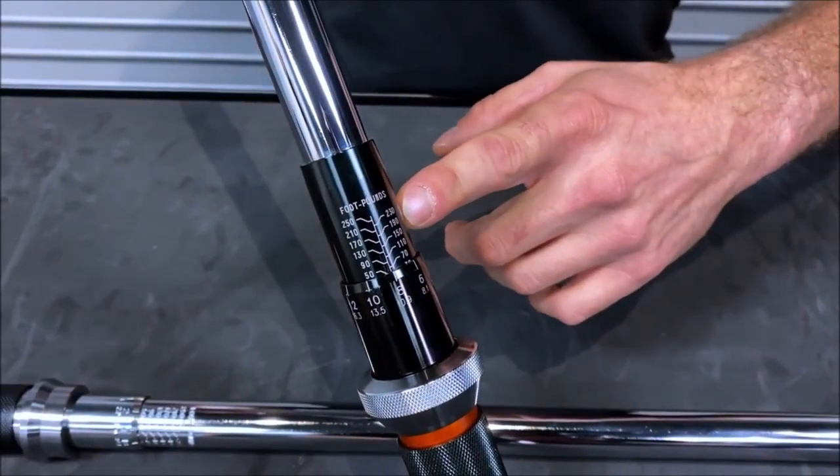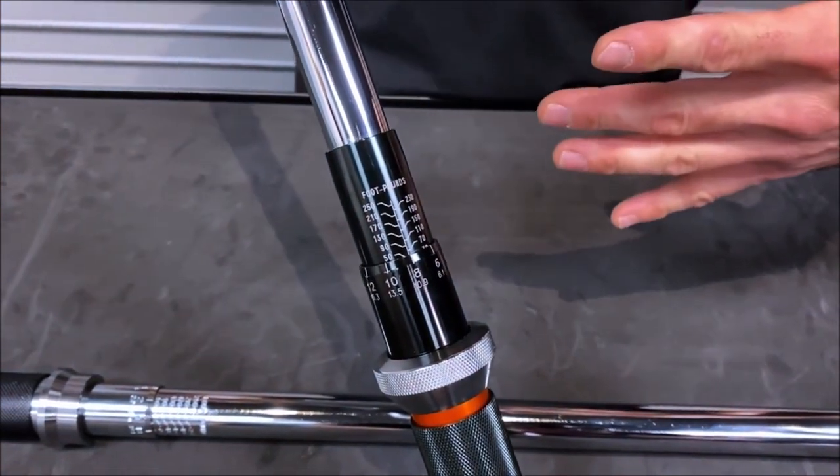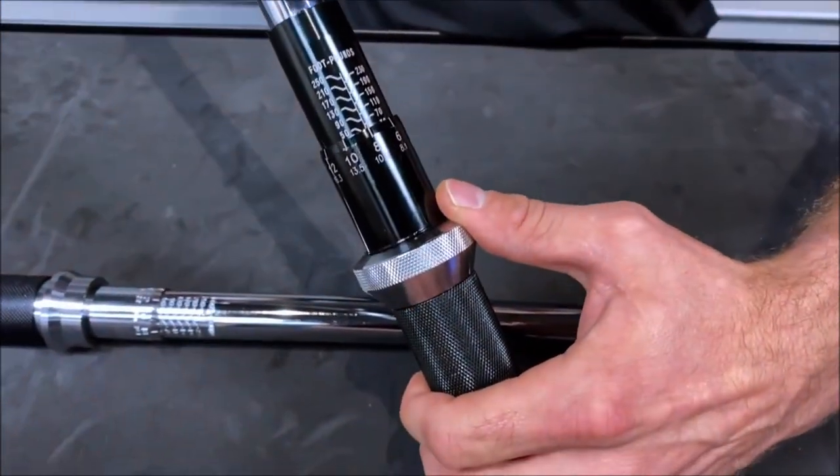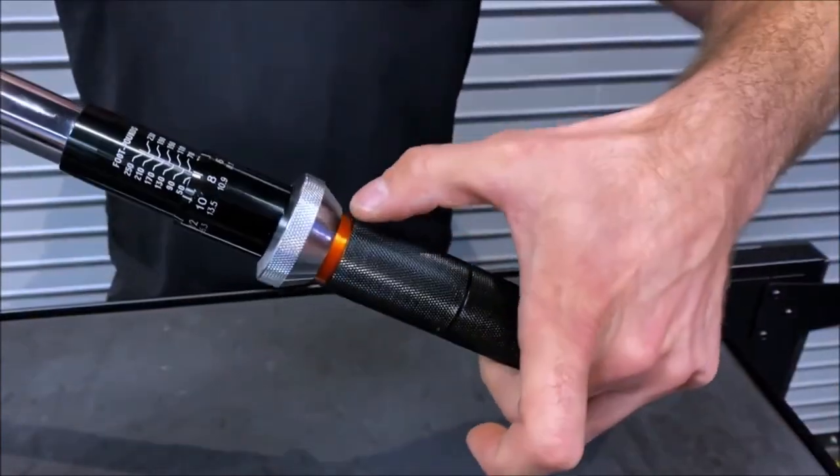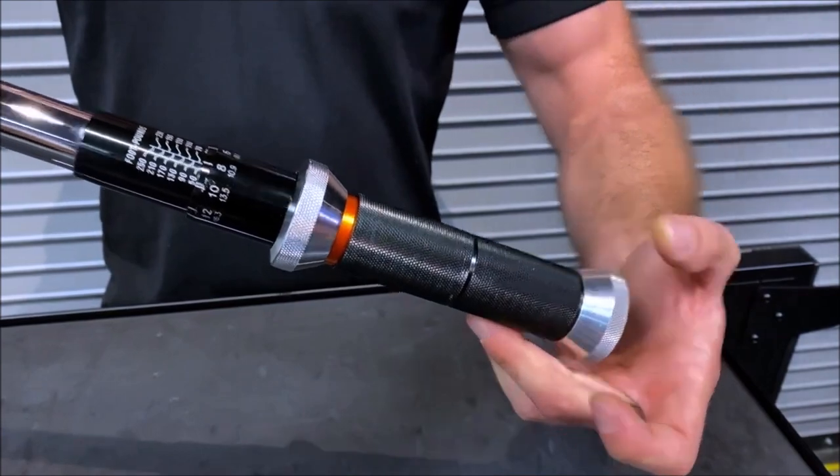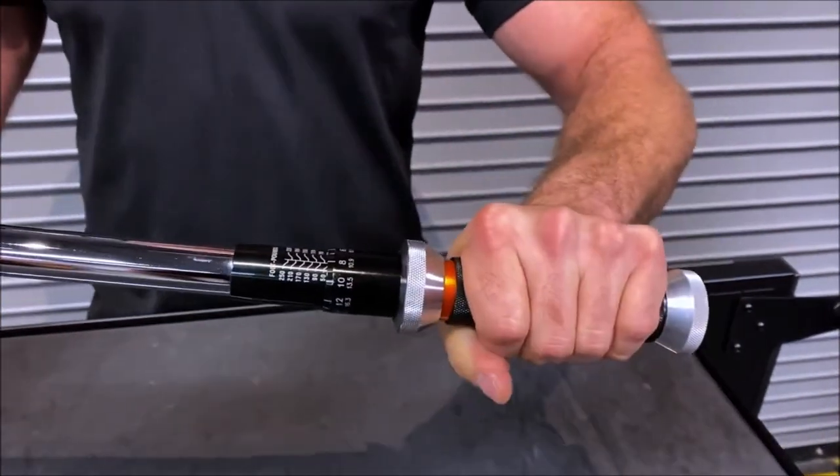We also have the high visibility scale with dual colors for quick visibility in low light environments. We have a more robust locking pull down collar for users with gloves. Knurled aluminum hand grip comes down to a hilt on the end, forcing our hand into perfect torque position. And that rounds out the features of our GearWrench micrometer torque wrench line.